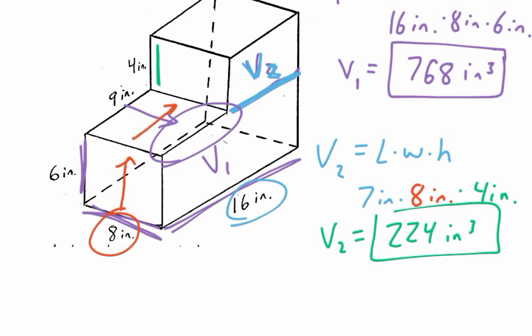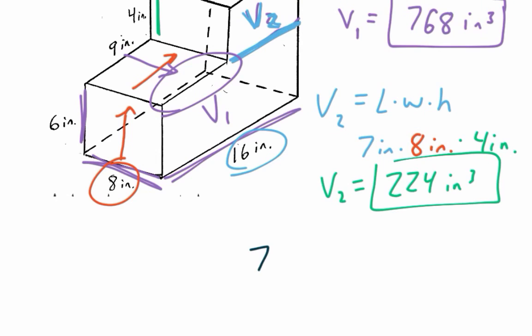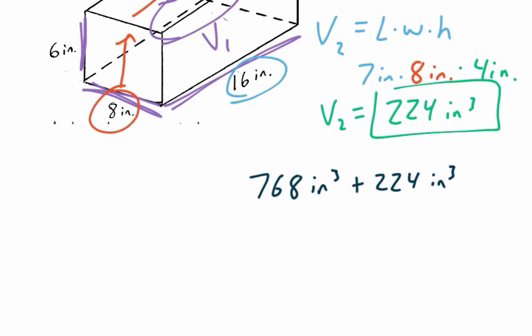So then for our final answer, we just take volume 1 plus volume 2. So I have 768 cubic inches plus 224 cubic inches. And those two combined give me 992 cubic inches. That's all the notes for section 6. Thank you.